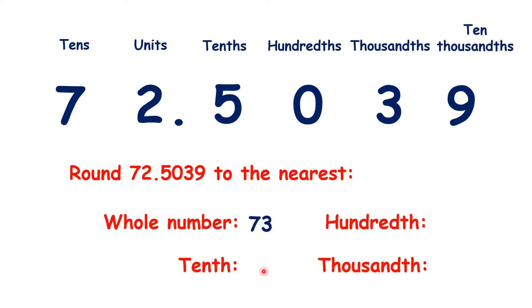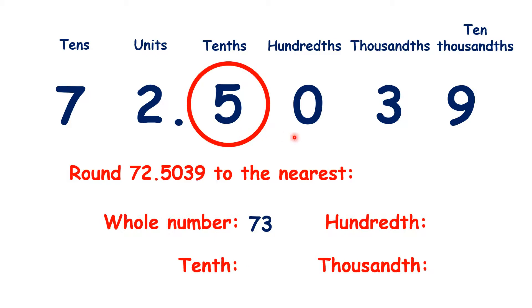Now for the nearest tenth, we find our tenths column, and because we have zero in the hundredths, we're rounding down, so we have 72.5.